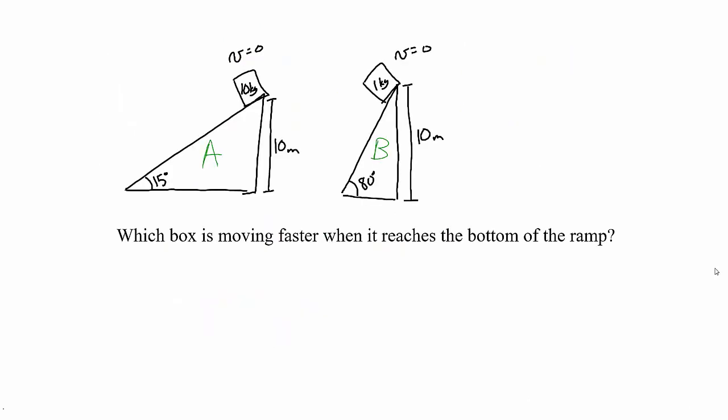I have two different ramps. One is tilted at 15 degrees and is at a height of 10 meters, with a 10 kilogram box on top starting from rest. The second ramp is tilted at 80 degrees, with a 1 kilogram box also starting at a height of 10 meters from rest. I want to look at which box is moving faster when it reaches the bottom, from the work and energy point of view. In both cases, the only work being done is work done by the force of gravity. The work done on box A is m1 — 10 kilograms — times g times d.